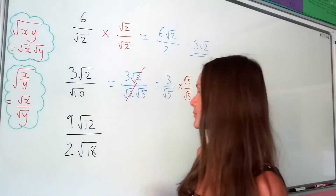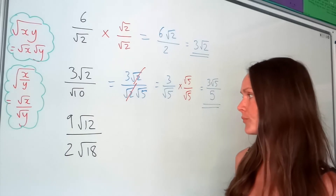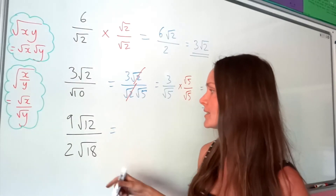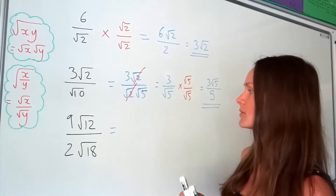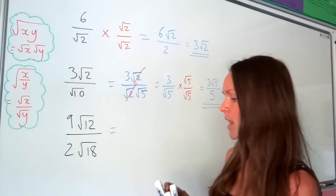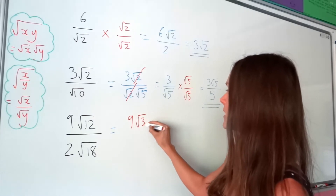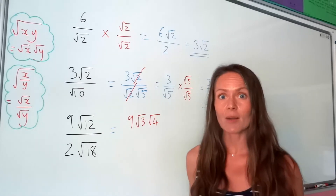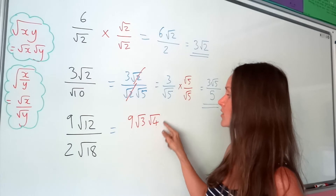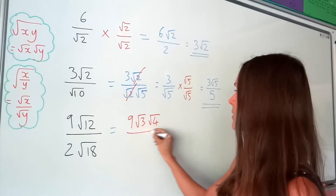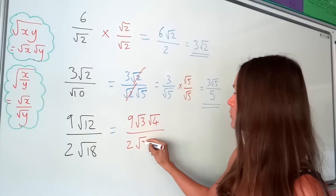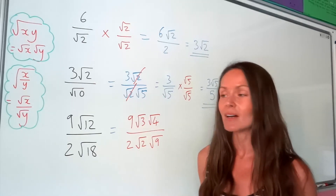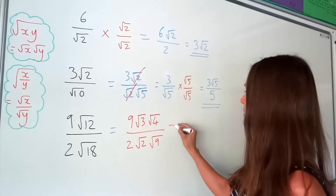On to the next one. There's more than one way to do this question. I'm going to use the same rule and split 12 and 18 up into their factors. For the numerator, I'll choose 3 and 4, since 3 times 4 is 12, and 4 is a square number so I can square root it. Underneath, I'll split 18 into root 2 and root 9, because 2 times 9 is 18, and 9 is also a square number.